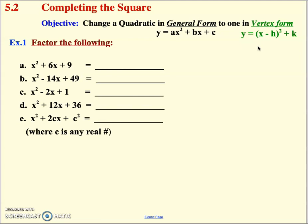Of the three forms we discussed in 5.1 — general, vertex, and factored — we're going to work with mainly these two. We'll do a little bit of factored form along the way and tie back into graphing from 5.1. The goal is to start with some smaller pieces before we can do the full complete the square.